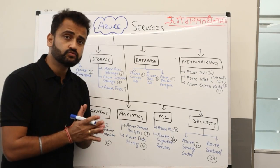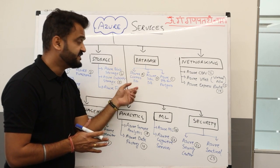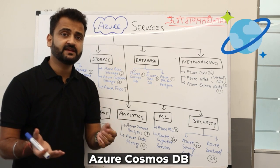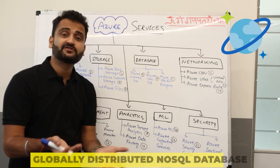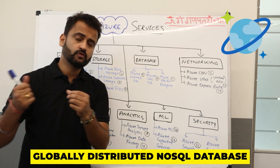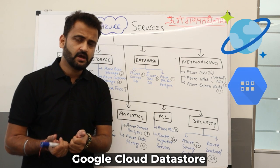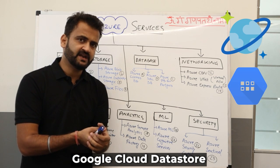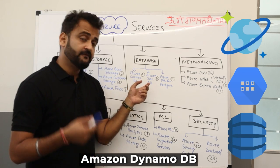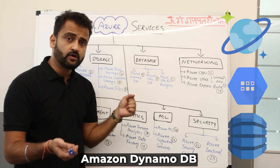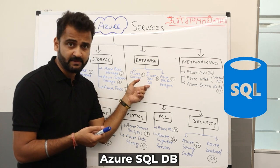Moving to databases, the ninth service is Azure Cosmos DB — a globally distributed NoSQL database. Comparing to Google, you have Google Datastore as a NoSQL database, and on Amazon we have DynamoDB. For relational workloads, we have Azure SQL Database.